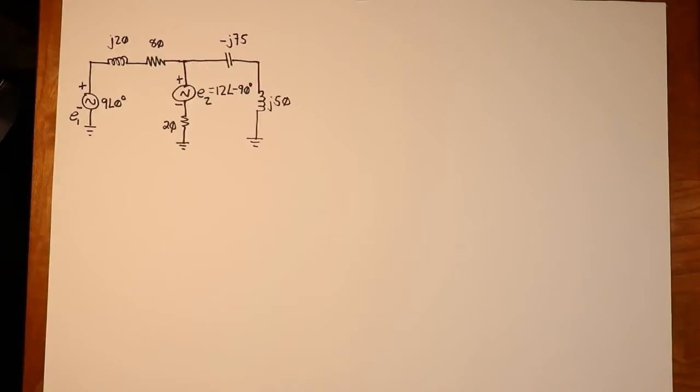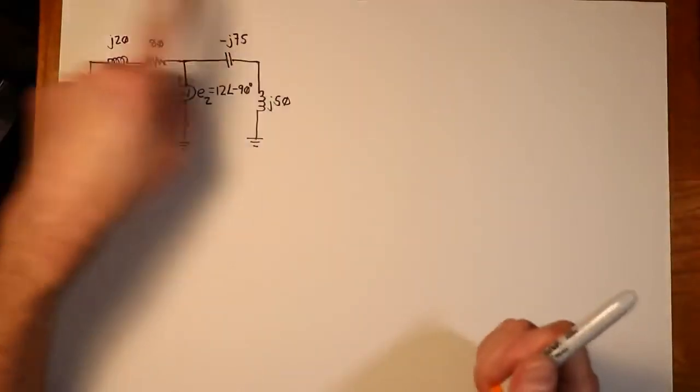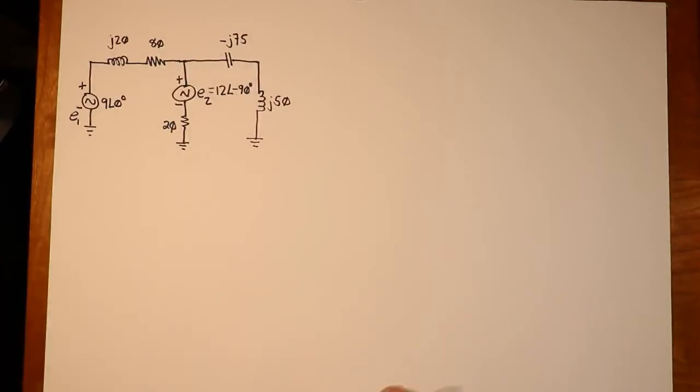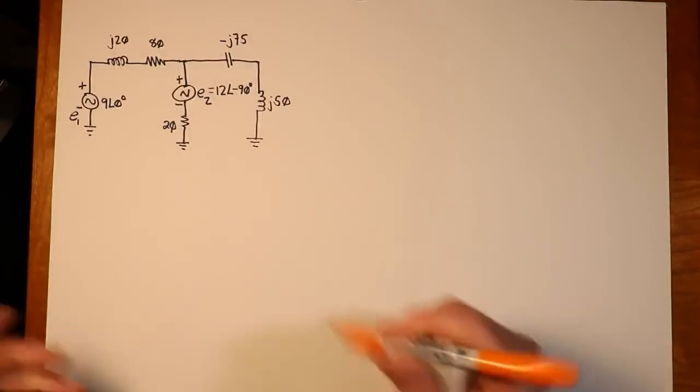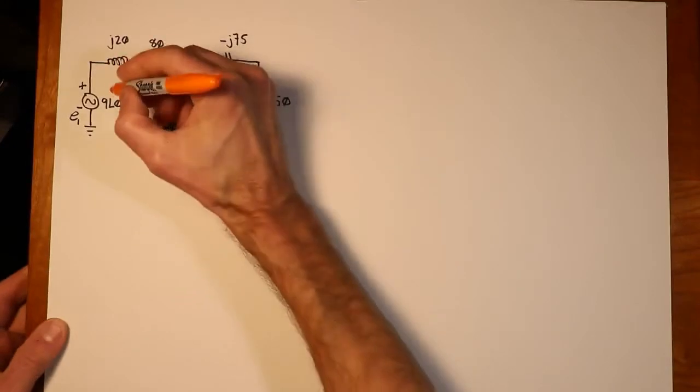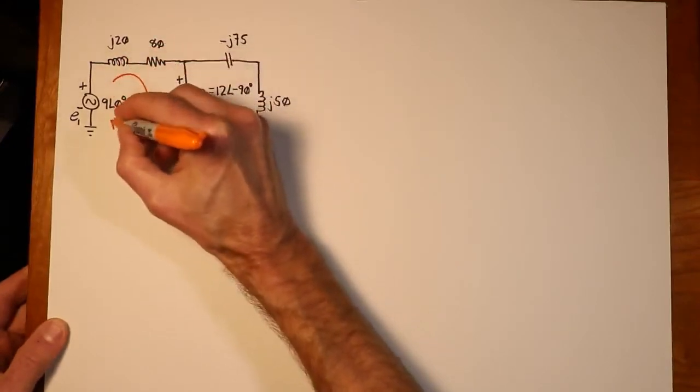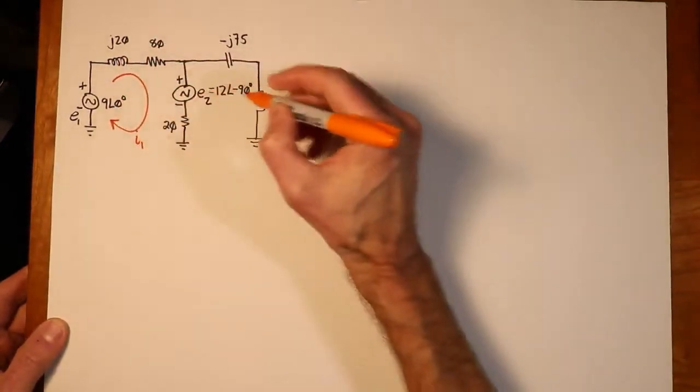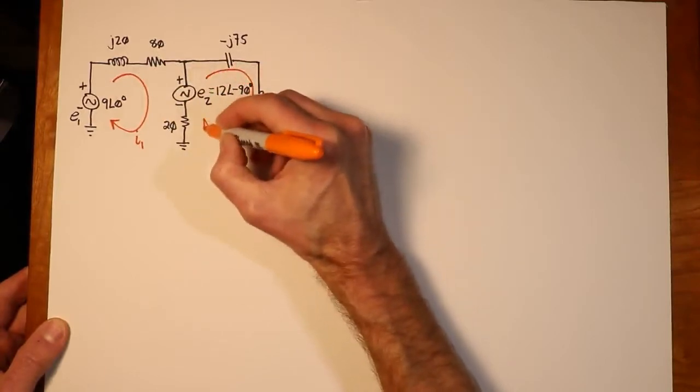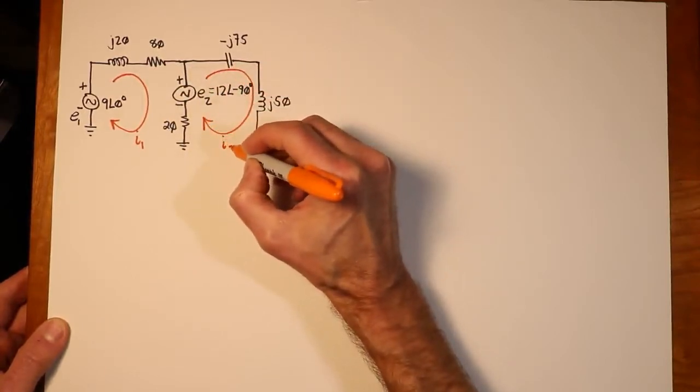It's like magic. It's a blank slate. Same circuit. Okay, so here's what we do. We define our two loops just like last time. So here is loop number one, current one. Here is mesh current loop number two.